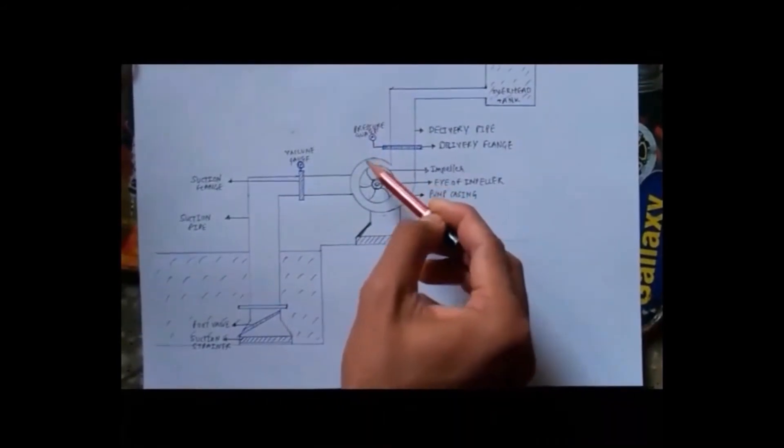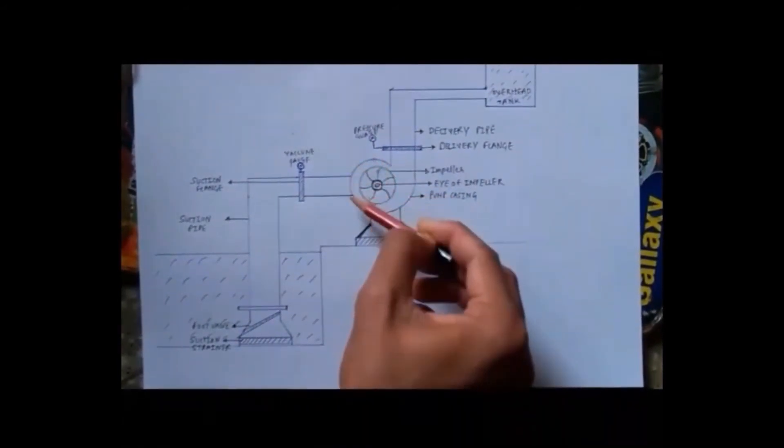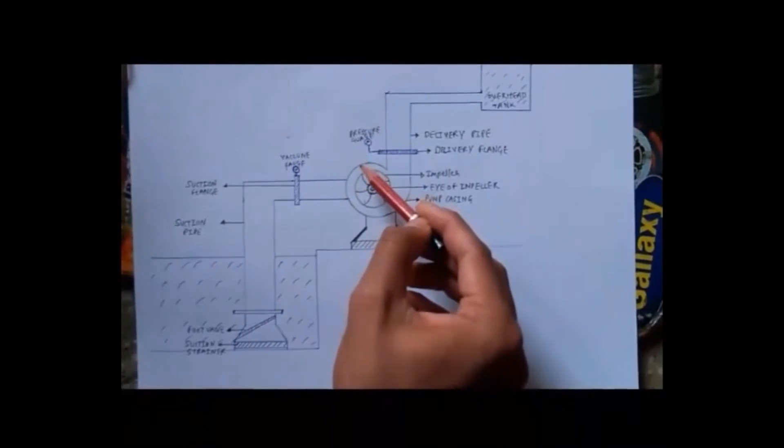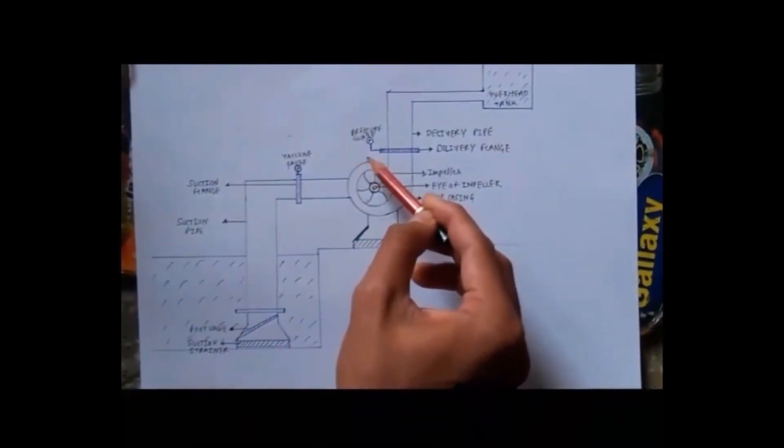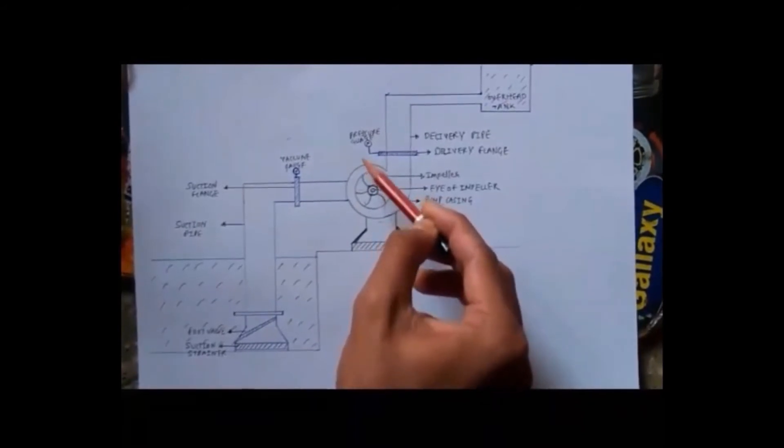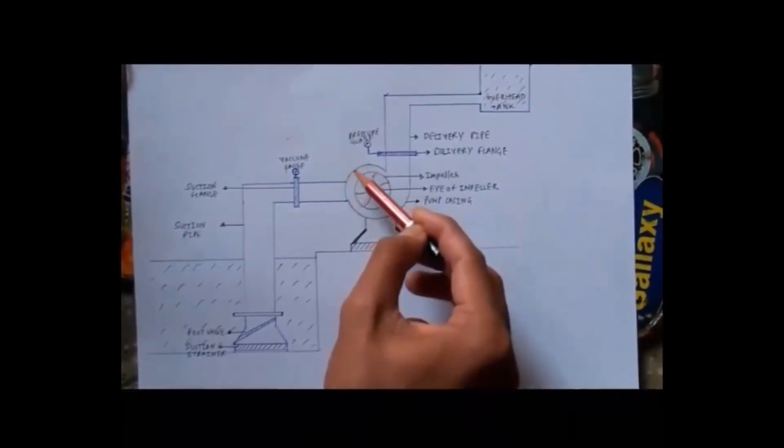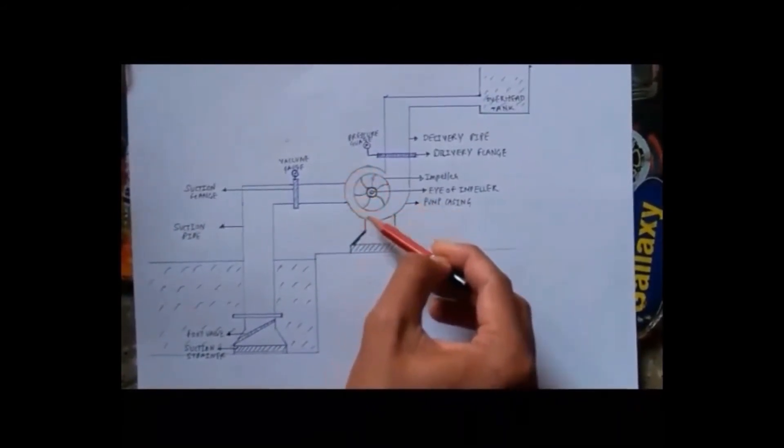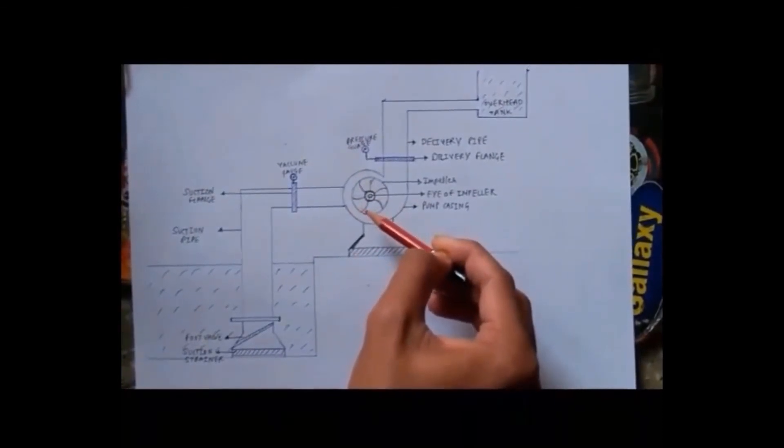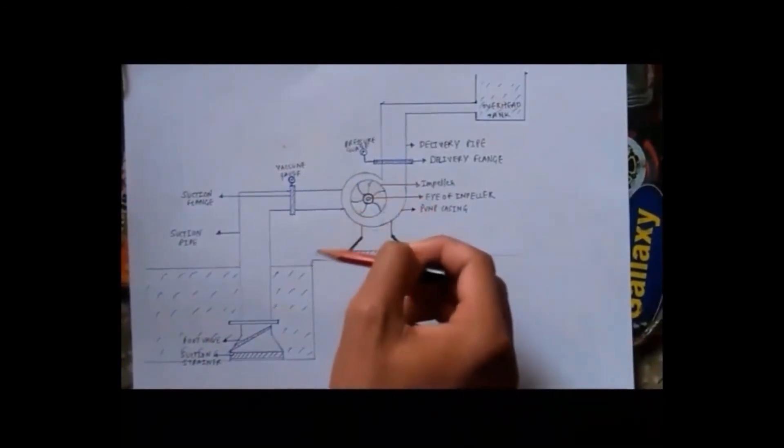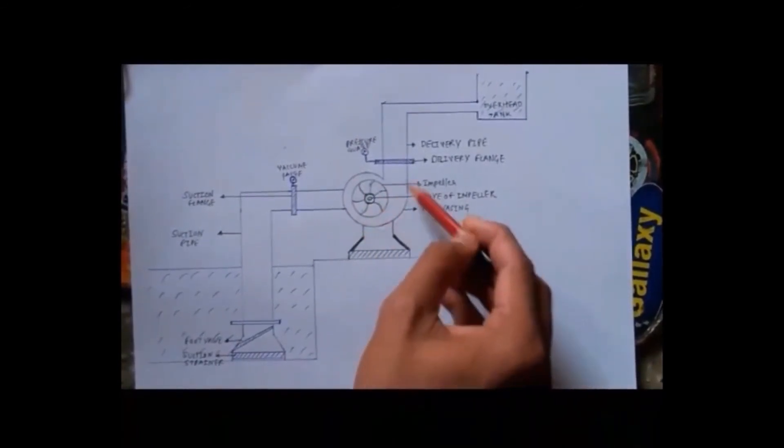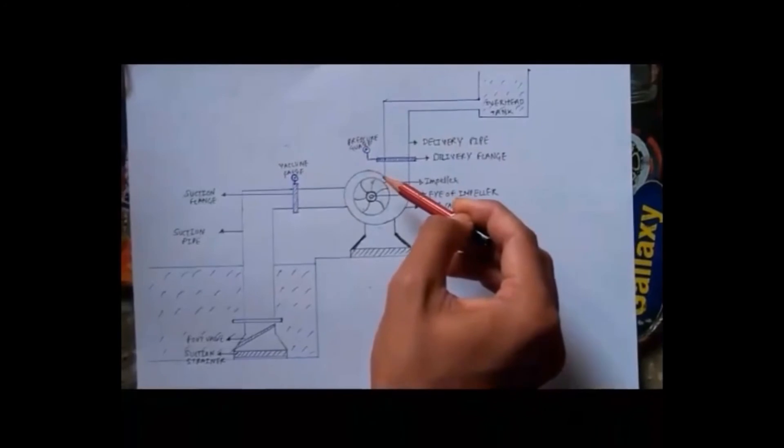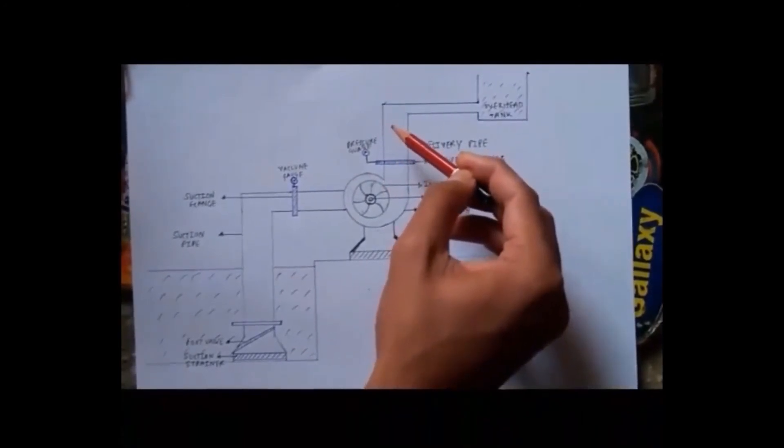The distance between the casing and the impeller is much less initially, then it increases. The significance of this casing is that when the distance between the impeller and the casing is less, velocity of water increases. As it moves further, velocity decreases as area increases. At the end, we can see there is maximum area, so velocity is less and pressure is much higher. Hence there is high pressure delivery.